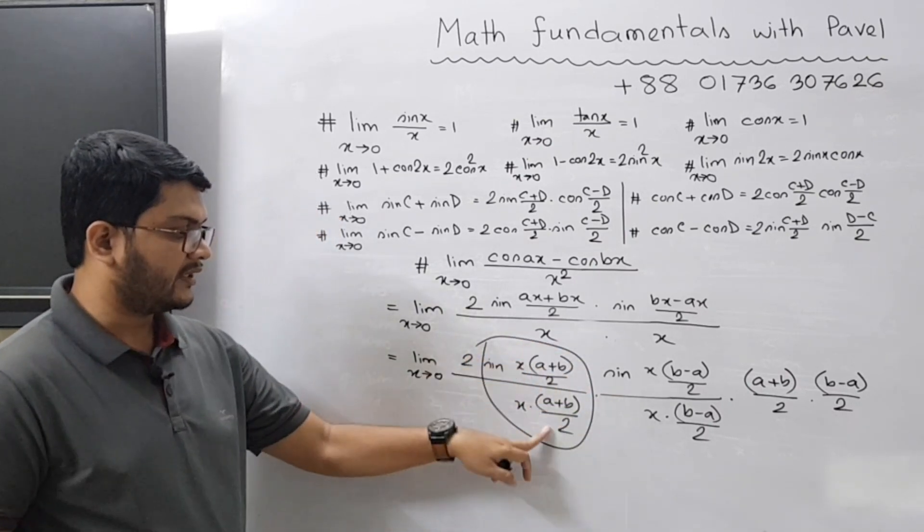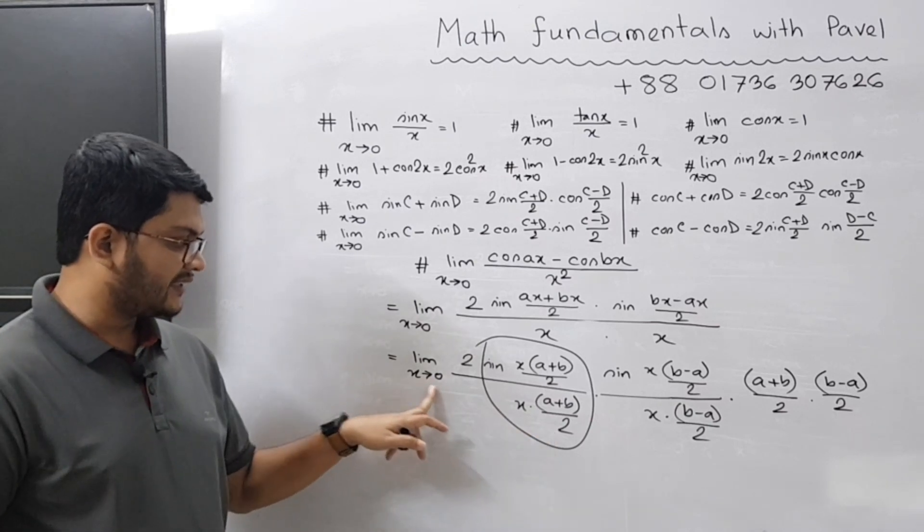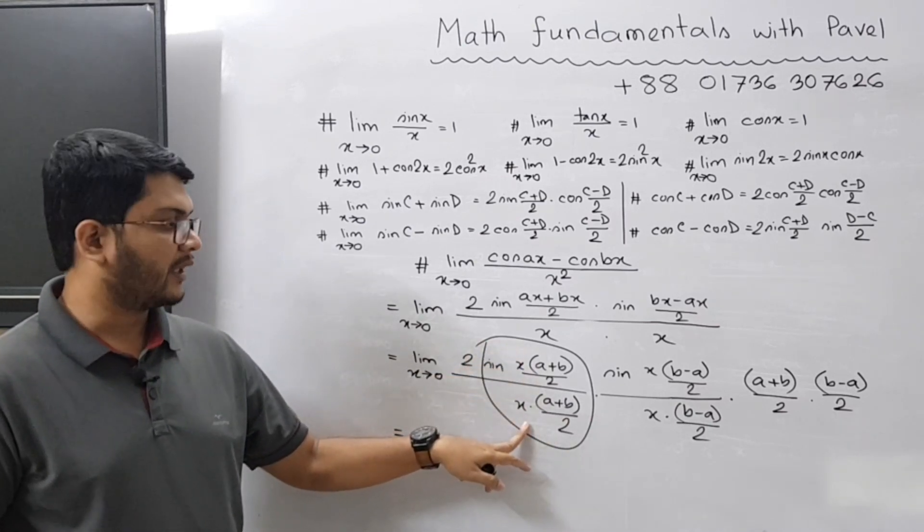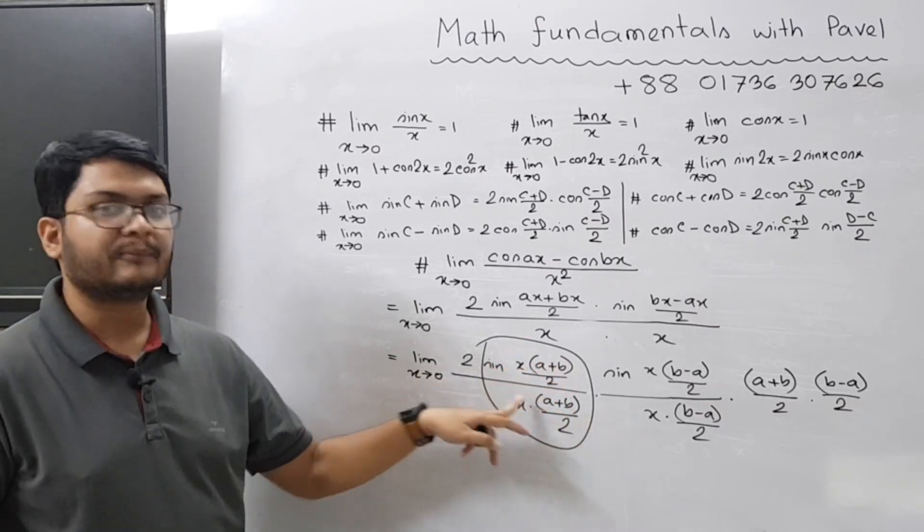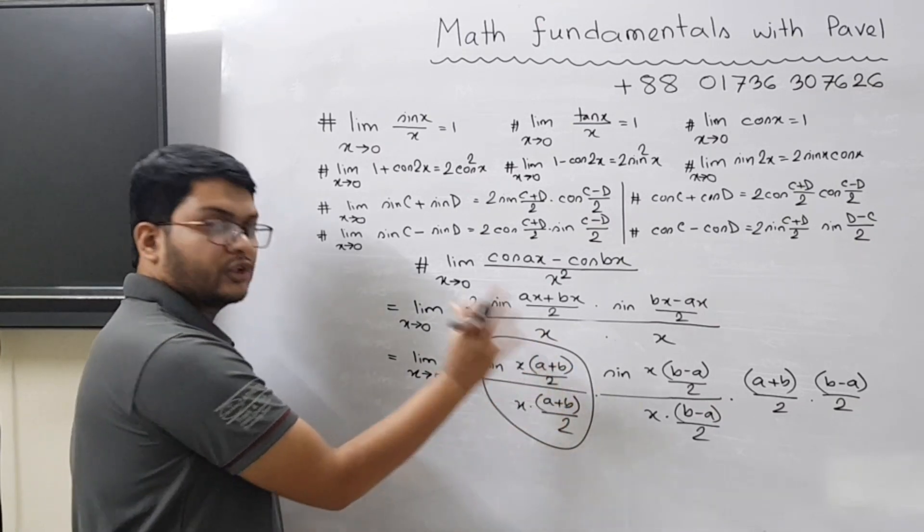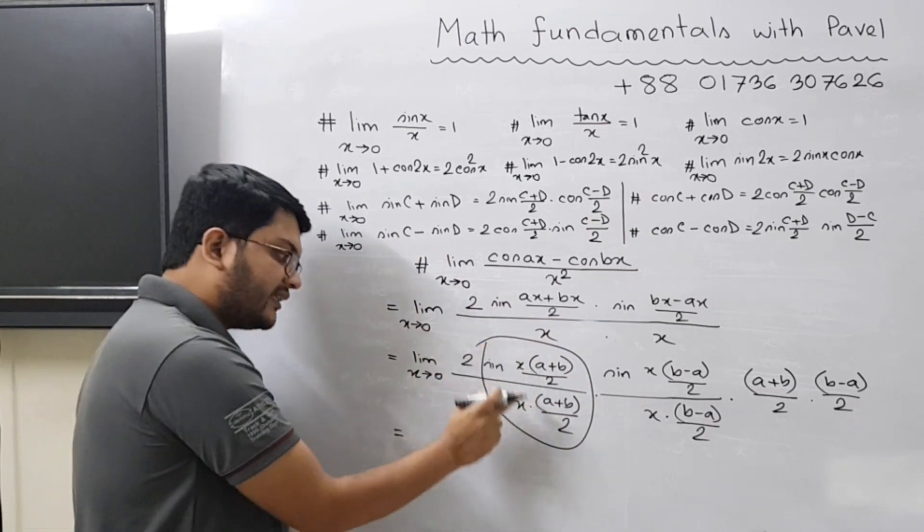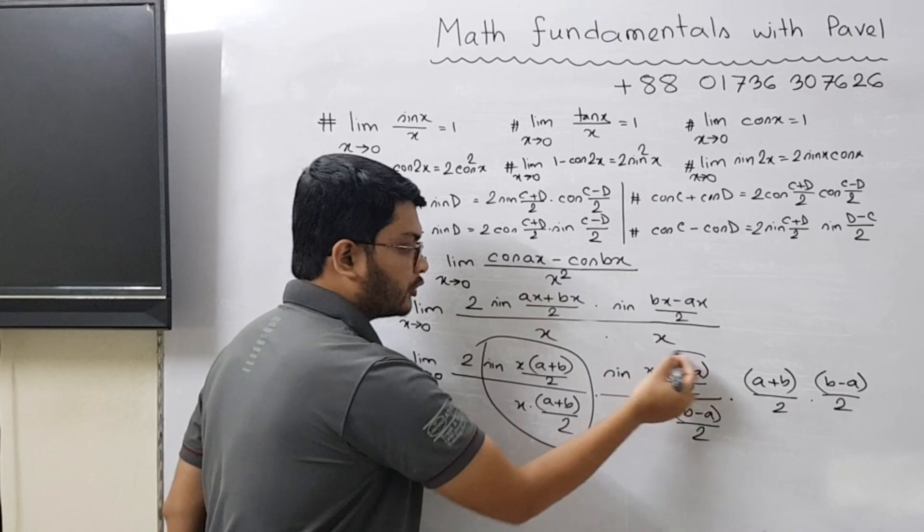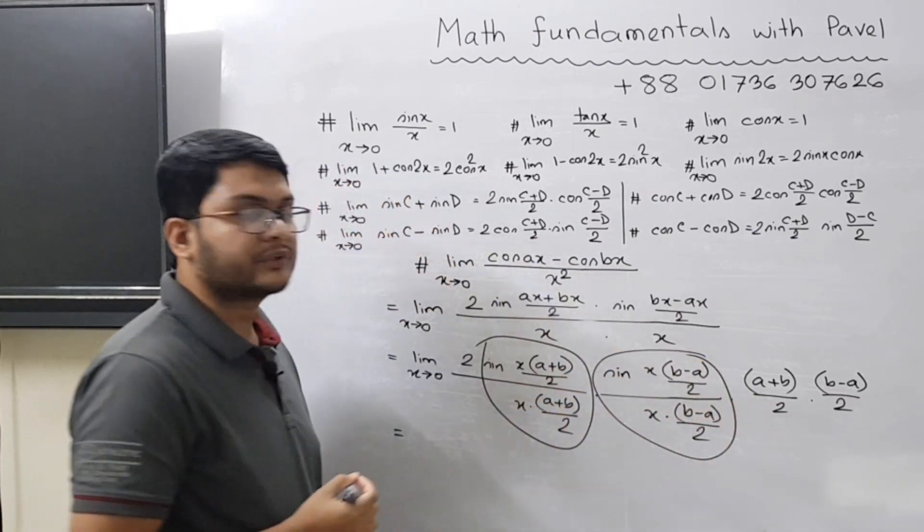This part is sine theta by theta, because if x is equal to 0, then sine x by x, because this part is equal to theta. If x is 0, this part is also 0.